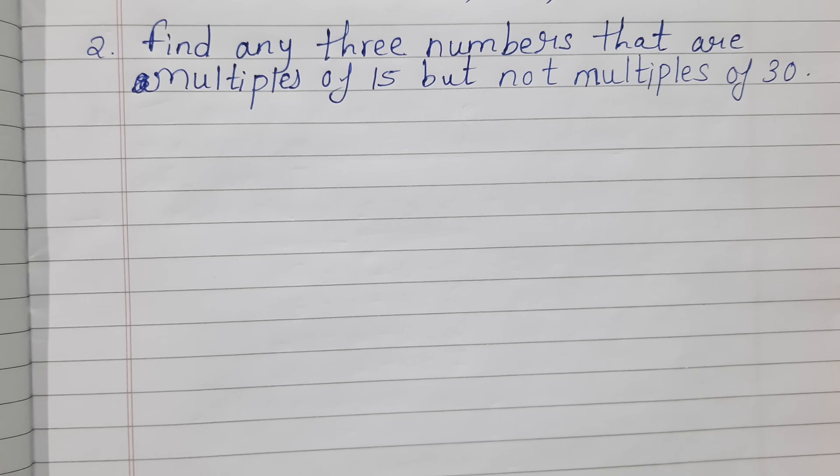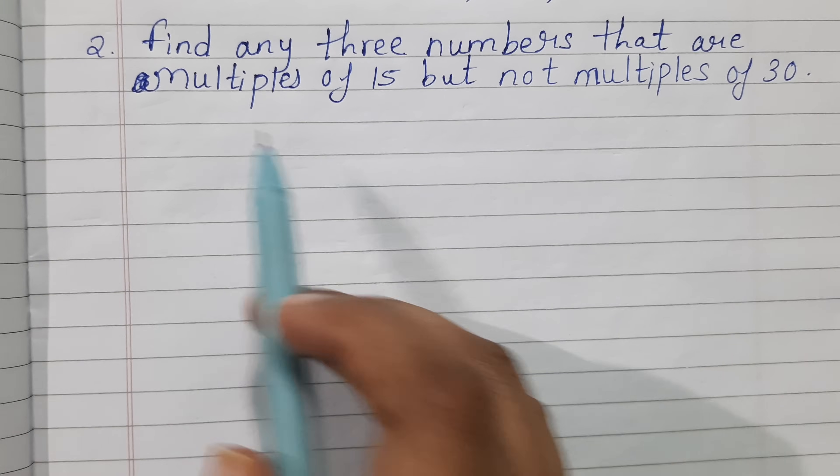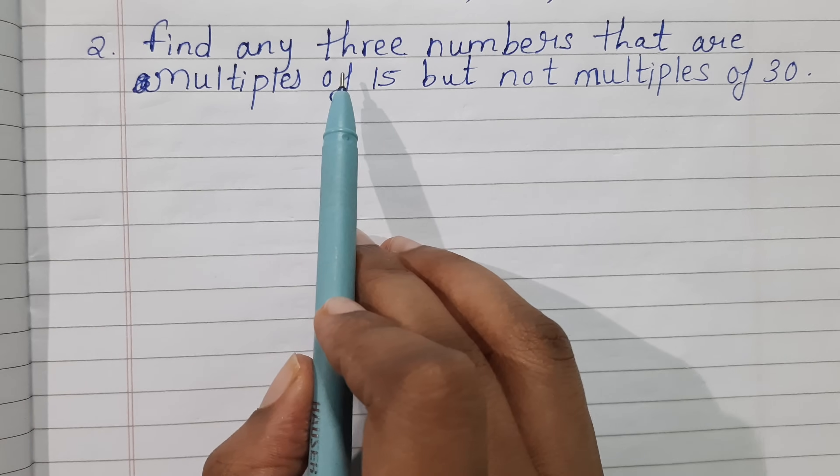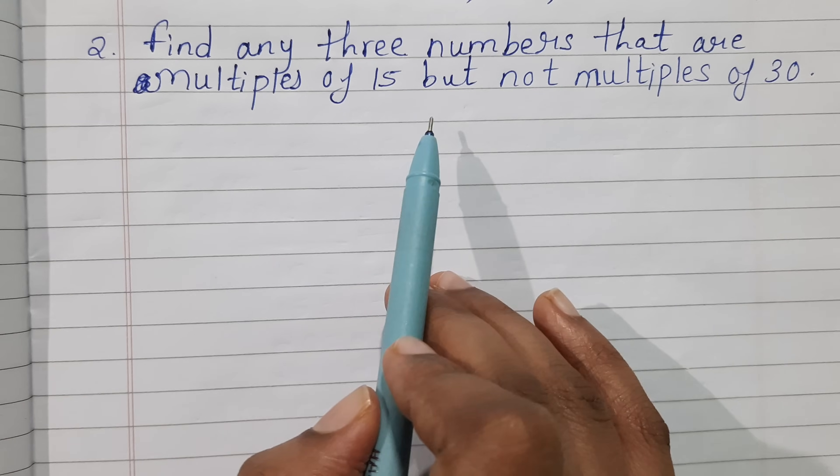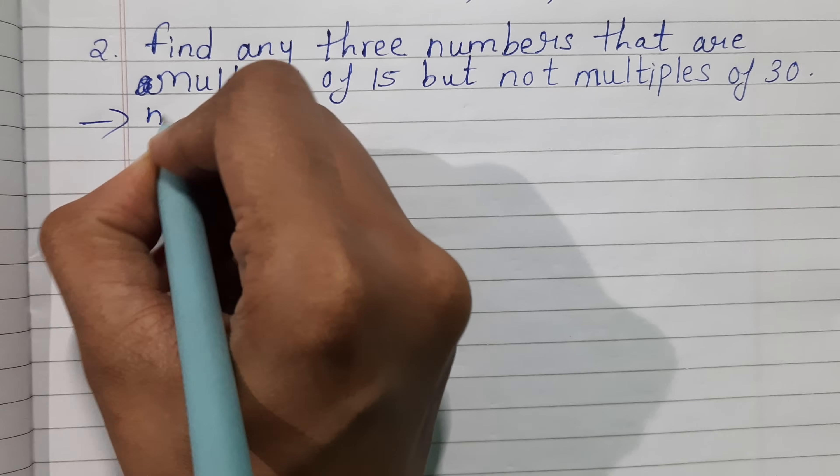Welcome to today's mathematics class. Today's question is from class 6 mathematics, chapter 5 Prime Time. The question is: find any 3 numbers that are multiples of 15 but not multiples of 30. First, you have to write the multiples.